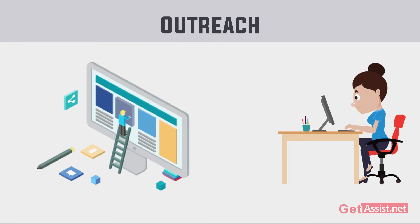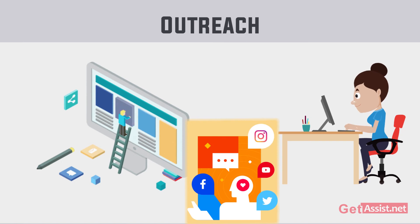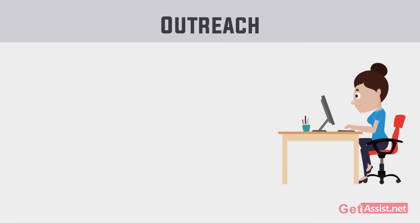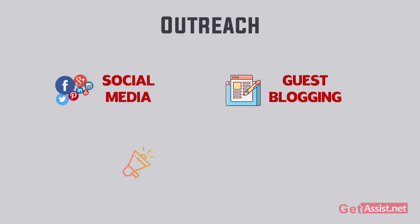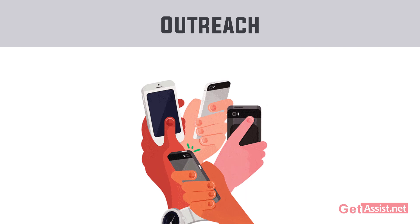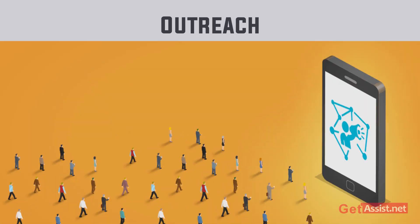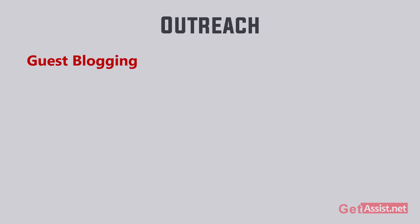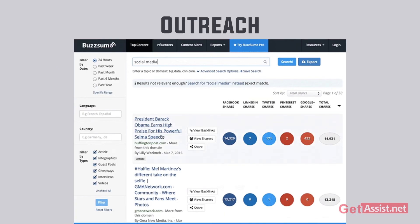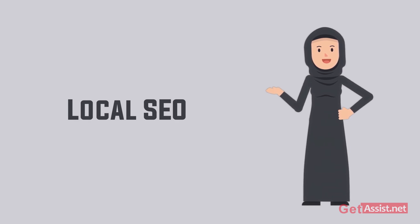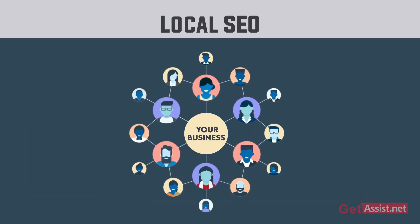Your job doesn't end at writing and posting content — the main task starts after that, when you have to promote your content. Without promotion, even the most well-written content will not rank. For outreach you can use social media, guest blogging, and influencer outreach. Simply sharing a link on Instagram, Facebook, or Twitter isn't enough; you should follow people in your industry, interact with them, and build an audience. Tools like BuzzSumo can help you find suitable blogs, websites, or influencers for your content type.